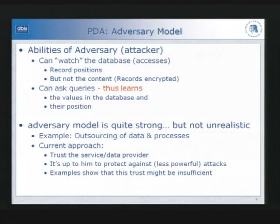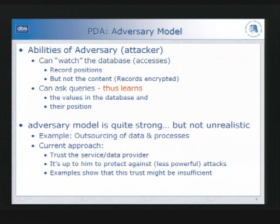I want to make clear what I consider a valid model of how strong an attacker or adversary is. The attacker is able to know not the content of the record, but the record's position on your storage media — on a disk or tape or whatever. All my solutions will not allow the attacker to look at the content of a record, because it will be encrypted. But the attacker will be able to say: this record sits at this position on my storage media.